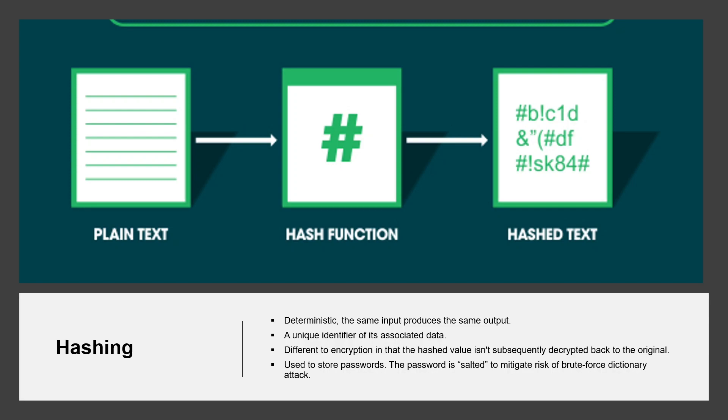Hashing is used to store passwords. When a user enters their password, the same algorithm that created the stored hash creates a hash of the entered password. This is compared to the stored hashed version of the password. If they match, the user has entered their password correctly. This is more secure than storing plain text passwords. However, hashing algorithms are also known to hackers. Because hash functions are deterministic, hackers can use brute force dictionary attacks by hashing passwords — for every matched hash, they know the actual password.